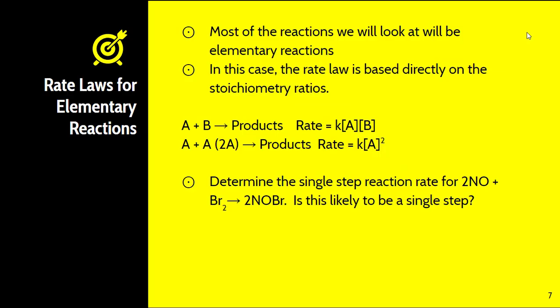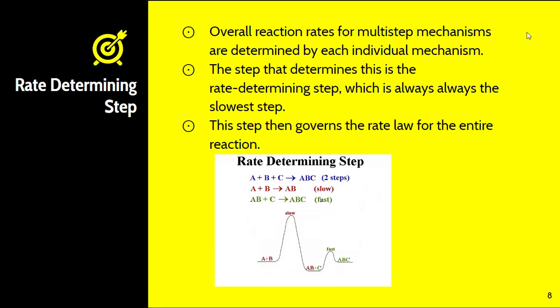Most of the reactions we'll look at involve elementary reactions — pretty basic and straightforward steps. The rate law is based directly on the stoichiometric ratio. For A plus B yielding a product, the reaction rate equals k times the concentration of A times the concentration of B. If two A's are converted into products, the rate is k times A squared. The reaction order is based directly on stoichiometric ratios.